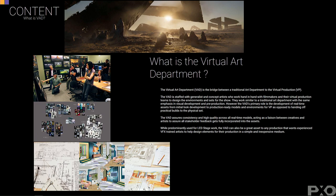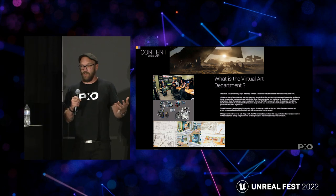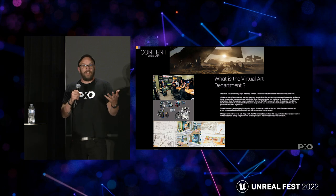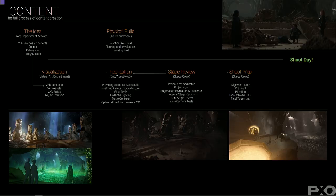A brief definition of a VAD artist is pretty much a generalist who's taking the asset from start to finish — rapid prototype concept art to get a sign-off from the clients and get production going on the build. The workflow goes from an initial concept from our client, which would be Paramount Plus or CBS, through two VAD stages: visualization on the conceptual side, and realization on the technical optimization side, then stage review, shoot prep, and shoot day.